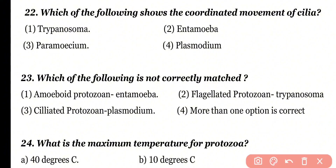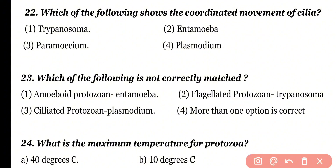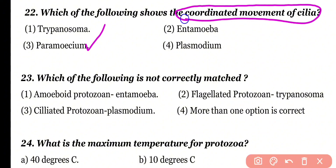Question number 22: Which of the following shows coordinated movement of cilia? Trypanosoma, Entamoeba, Paramecium, or Plasmodium? Correct answer is option 3. Paramecium shows coordinated movement of cilia.